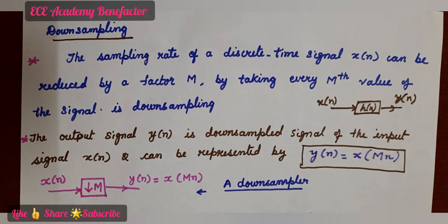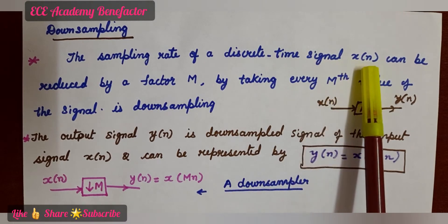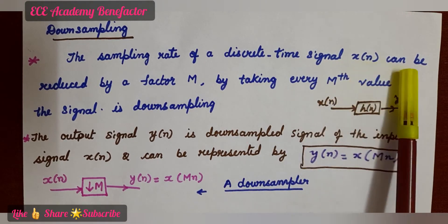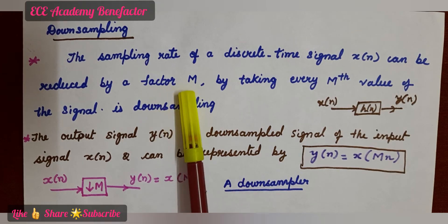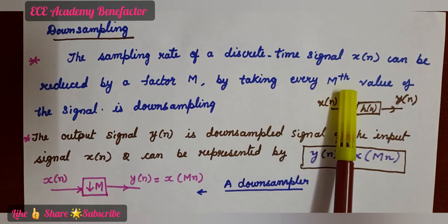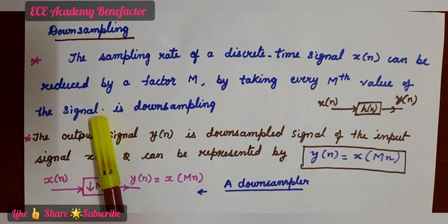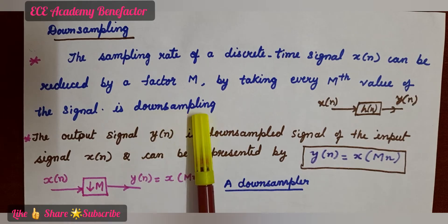In this class, I will be explaining about downsampling and upsampling. Coming to the definition, the sampling rate of a discrete time signal x of n can be reduced by a factor of capital M. The sampling rate is reduced by taking every Mth value of the signal. This is known as downsampling.